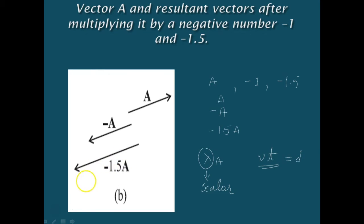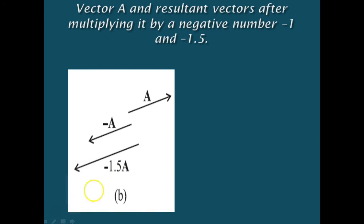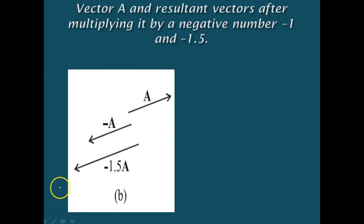If we multiply a negative number, along with the magnitude the direction also changes. You can observe in the figure: minus A and minus 1.5A are moving in one direction, and positive A is moving in some other direction. So when we multiply positive numbers, only magnitude changes with no change in direction. But if you multiply a vector with a negative number, both magnitude and direction change.